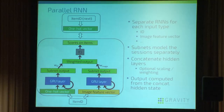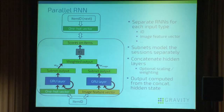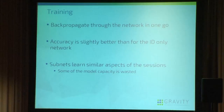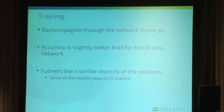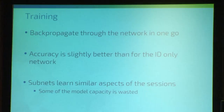That's why we came up with a new architecture called parallel RNN, or PRNN for short. You have several subnets in your network, where each subnet focuses on a certain input type — one focuses on the item ID and the other on the image features. These subnets model the sessions separately, and in the end we concatenate the hidden layers and compute the output from these two session models. This gives us the best of both worlds. We can train this network easily by backpropagating through it in one go, and we get accuracy slightly better than the ID-only network.